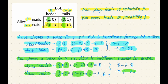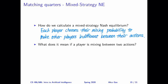So overall, there is one mixed strategy Nash equilibrium. At this equilibrium, Alice plays heads with probability 0.5 and Bob plays heads with probability 0.5 as well. To summarize, the general principle for deriving a mixed strategy Nash equilibrium is that each player chooses their mixing probability to make the other players indifferent between their actions.